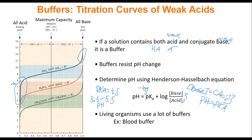Buffers are in our cells, they're in our blood. Every living organism probably has some kind of buffer. The example here is our blood buffer — our blood is buffered by carbon dioxide. CO2 is a gas and cannot travel in the blood as a gas. But we need to get rid of carbon dioxide as it's a product of respiration. So what we do is take this carbon dioxide and make it into carbonic acid, H2CO3.